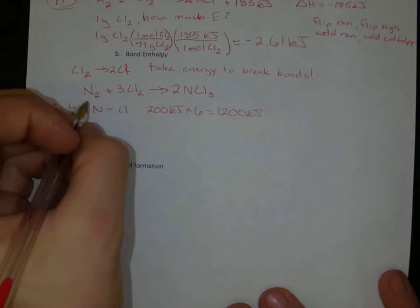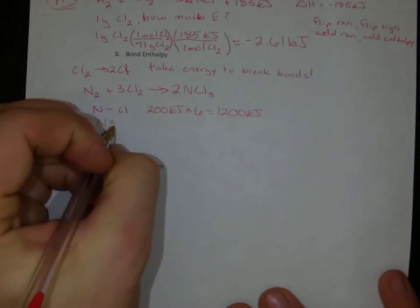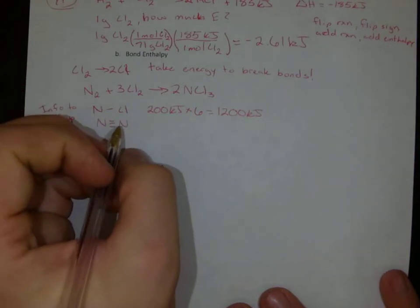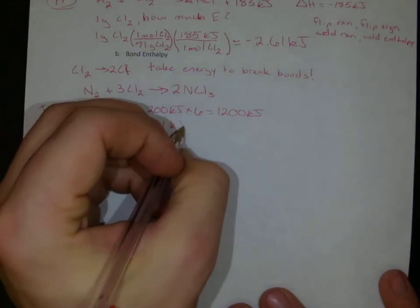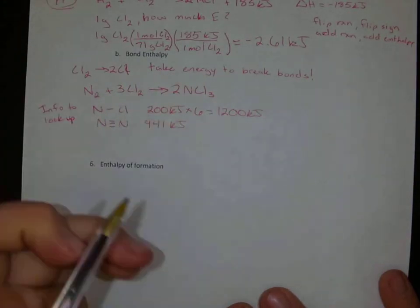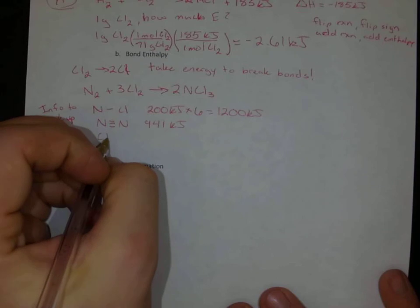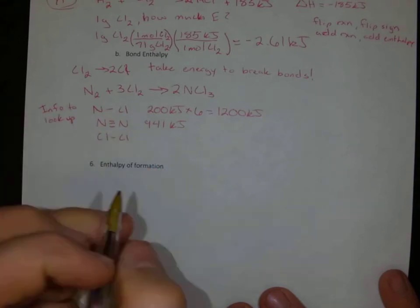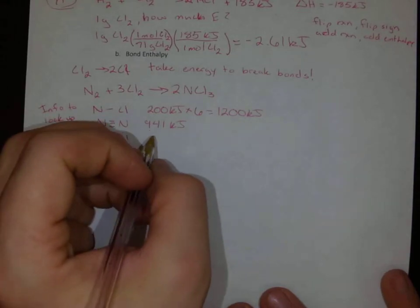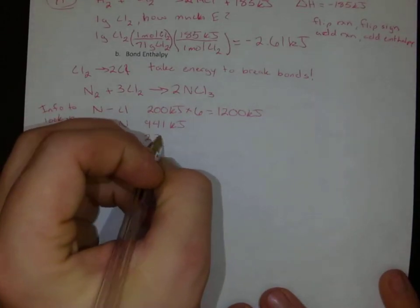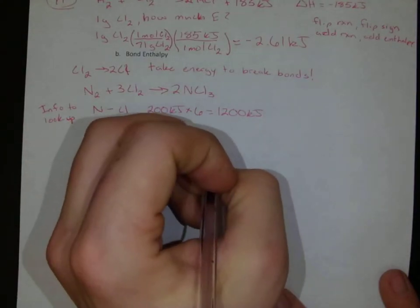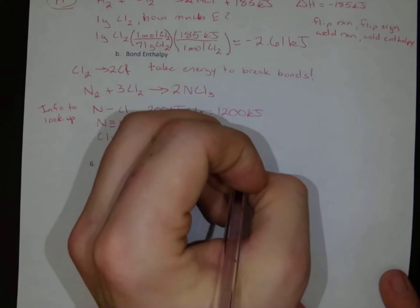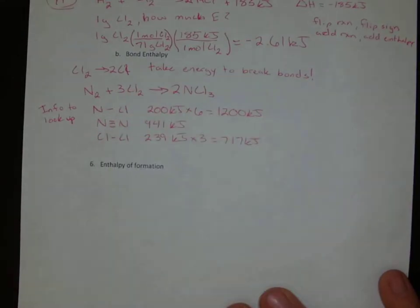Over on the left-hand side, we've got an N triple bond to an N. This is 941 kilojoules, and then finally we have three chlorine-chlorine bonds. A single chlorine-chlorine bond is 239 kilojoules, but we have three of them, so we're going to multiply it by three. That's 717 kilojoules.